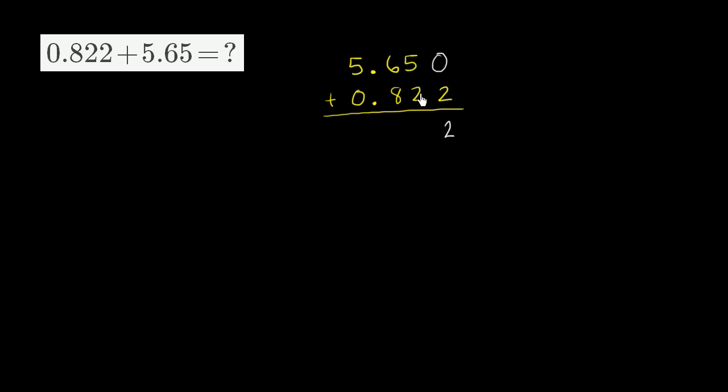5 hundredths plus 2 hundredths is 7 hundredths. 6 tenths plus 8 tenths is 14 tenths. Well, 14 tenths is the same thing as 4 tenths and 1.